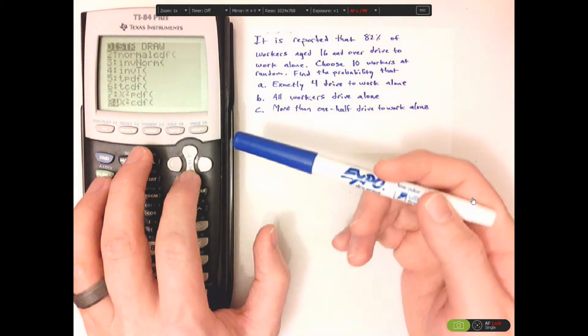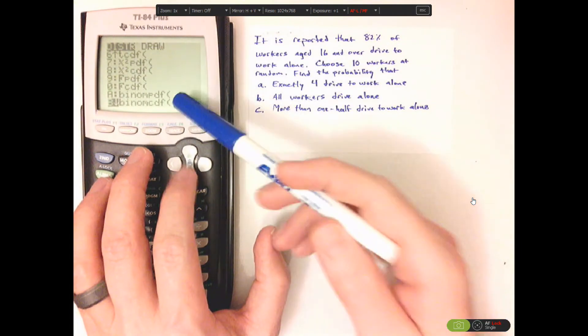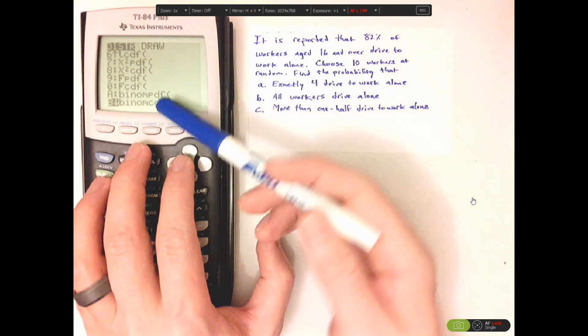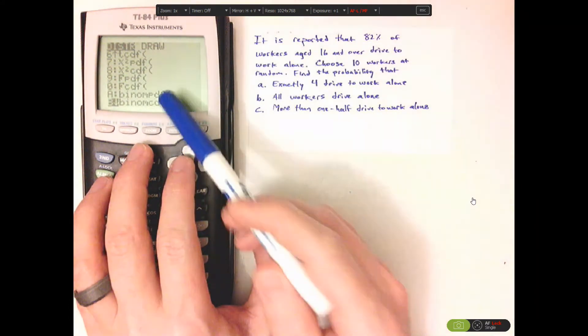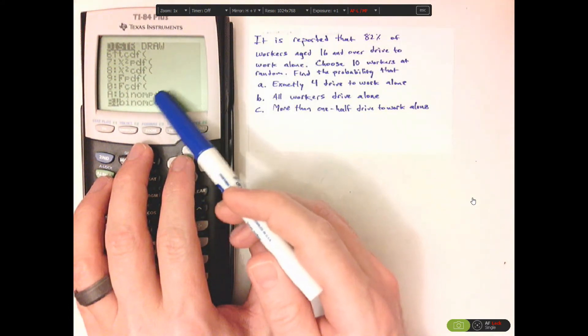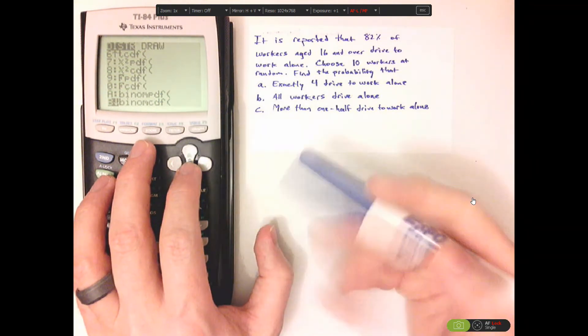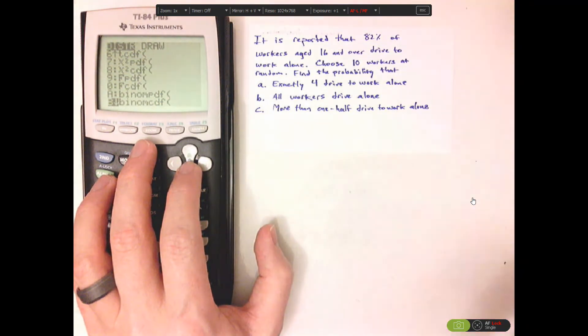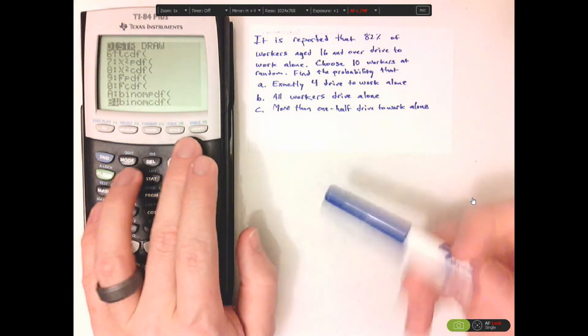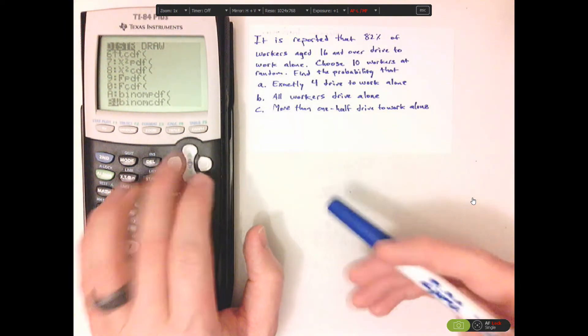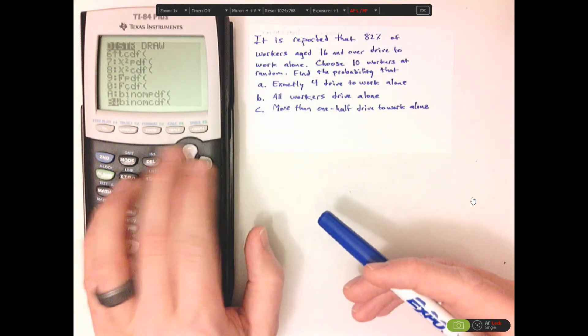So scroll down. There we are. There's two different ones. One is PDF. The other is CDF. P is looking for an individual probability. And C, CDF stands for cumulative distribution function. So you're looking for like a range of probabilities.